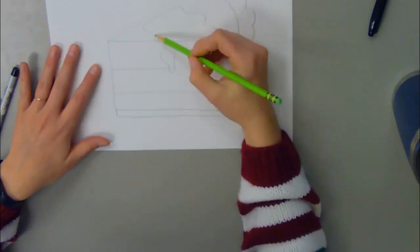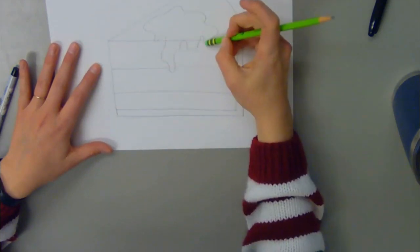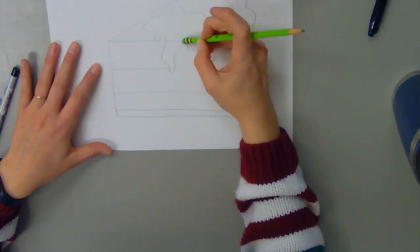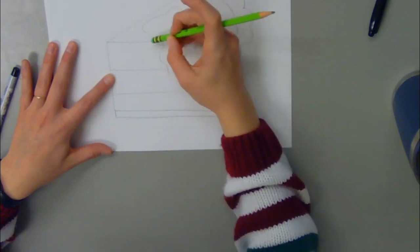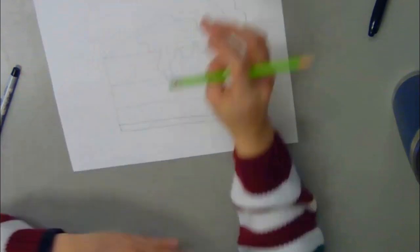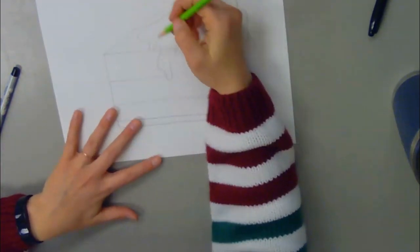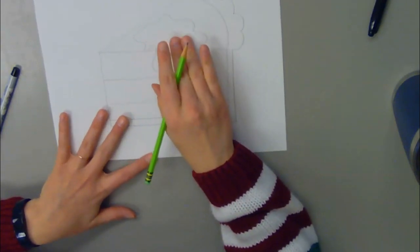Now because my drips went over the edge of the pie, I need to erase out all of those spots so that it looks like it's overlapping the edge of my pie. Now I'm going to draw a few more things as my toppings.